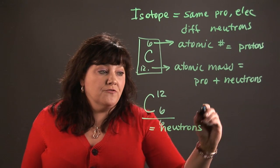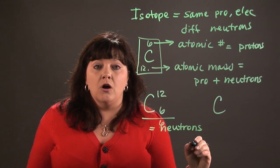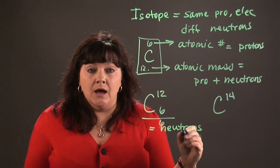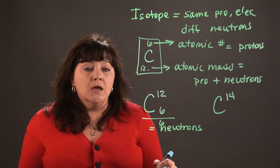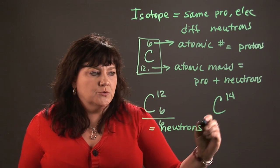But carbon has another form. You may have heard something called carbon-14. They use it to date fossils that are really, really, really old. So carbon-14 is an isotope of carbon-12.